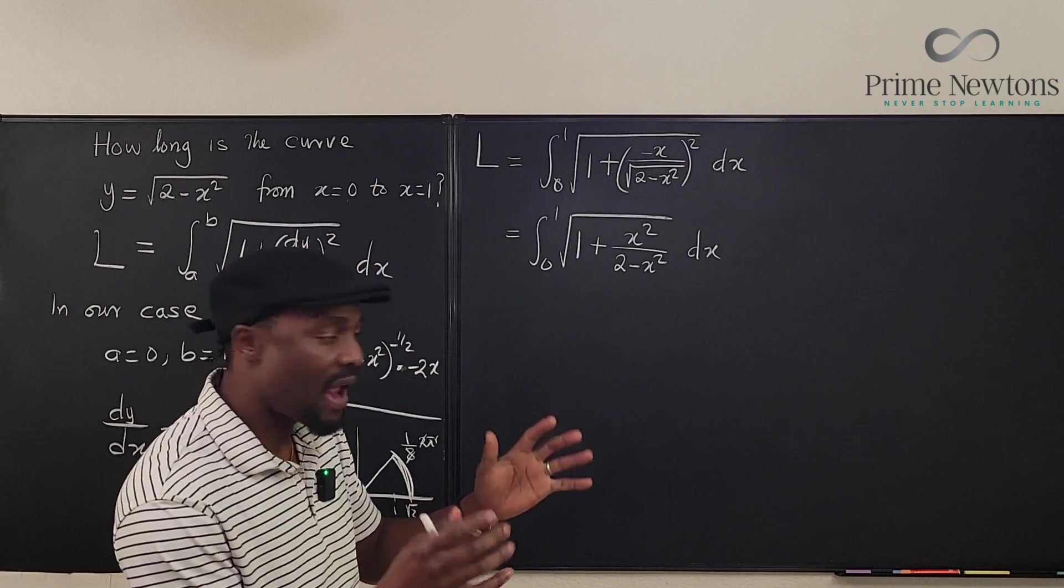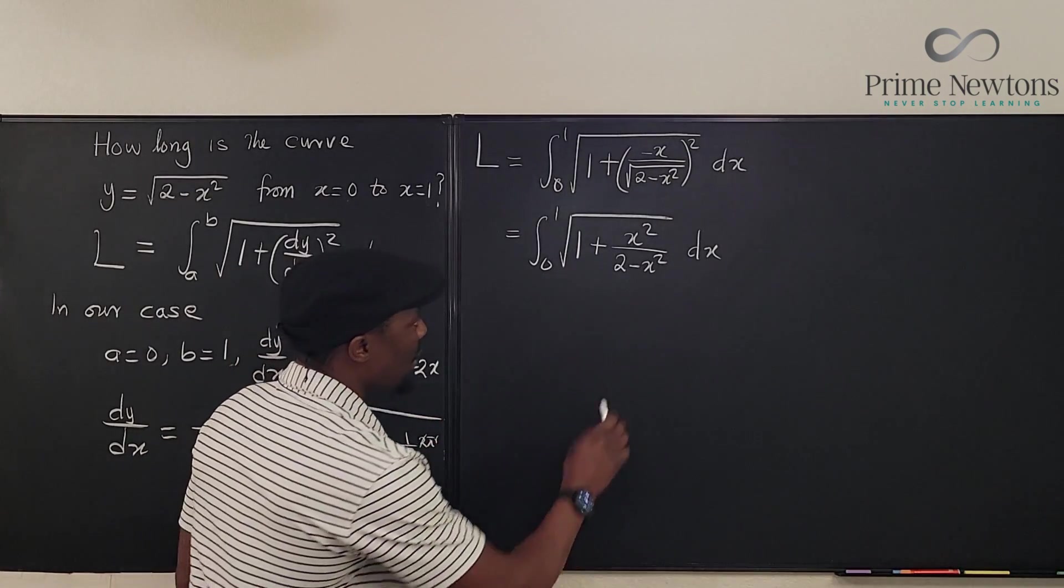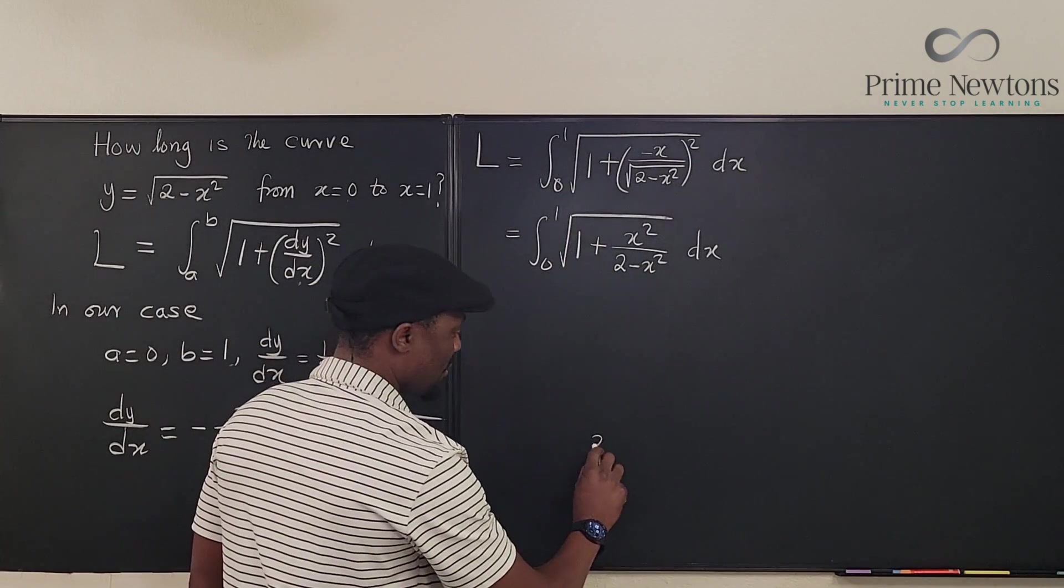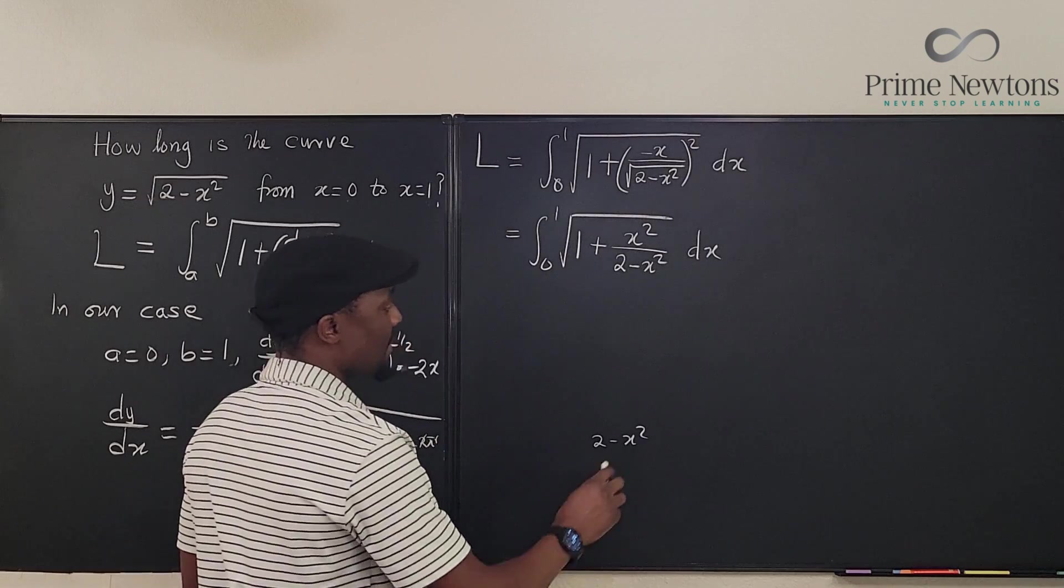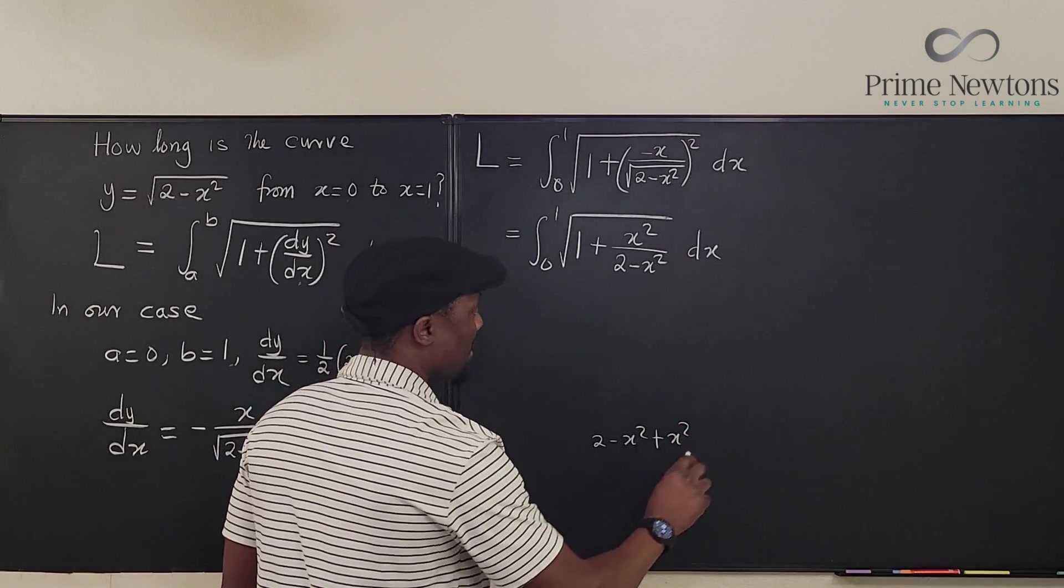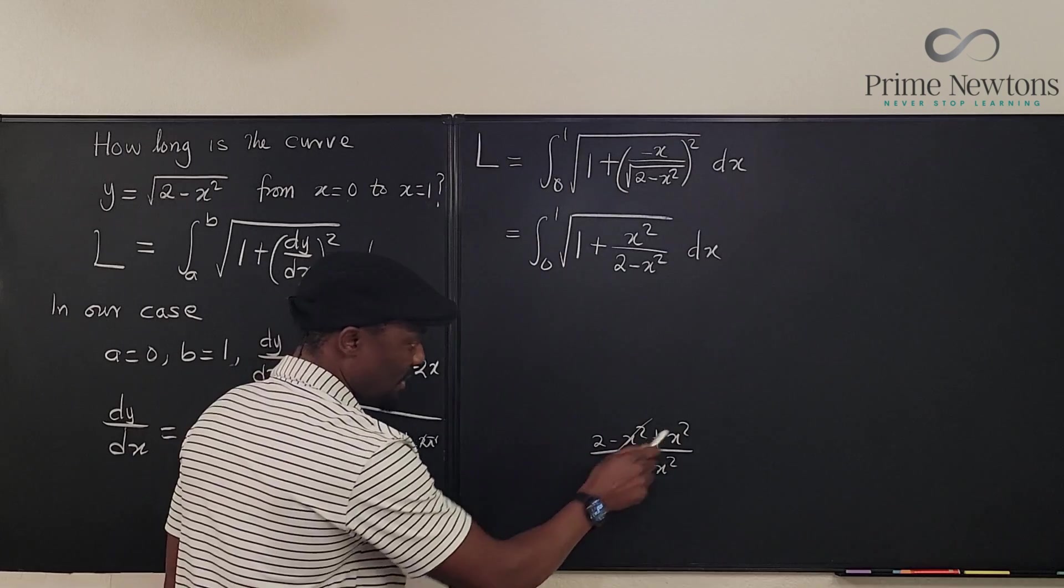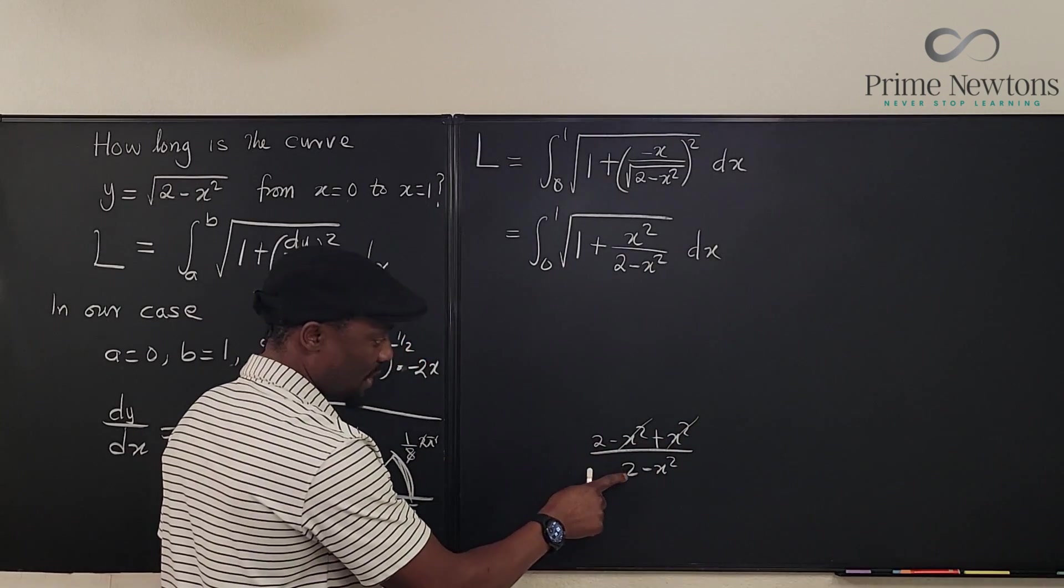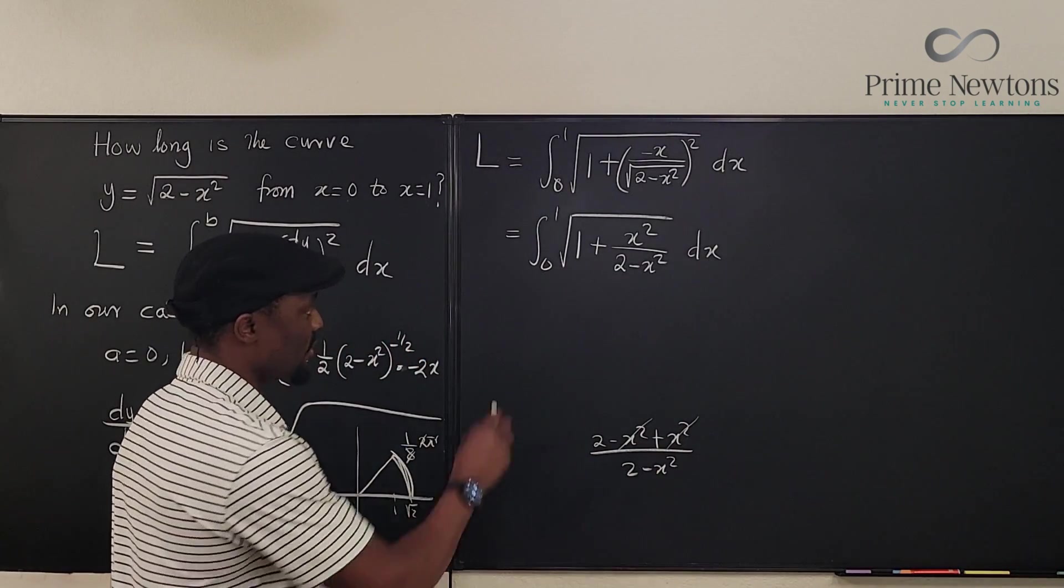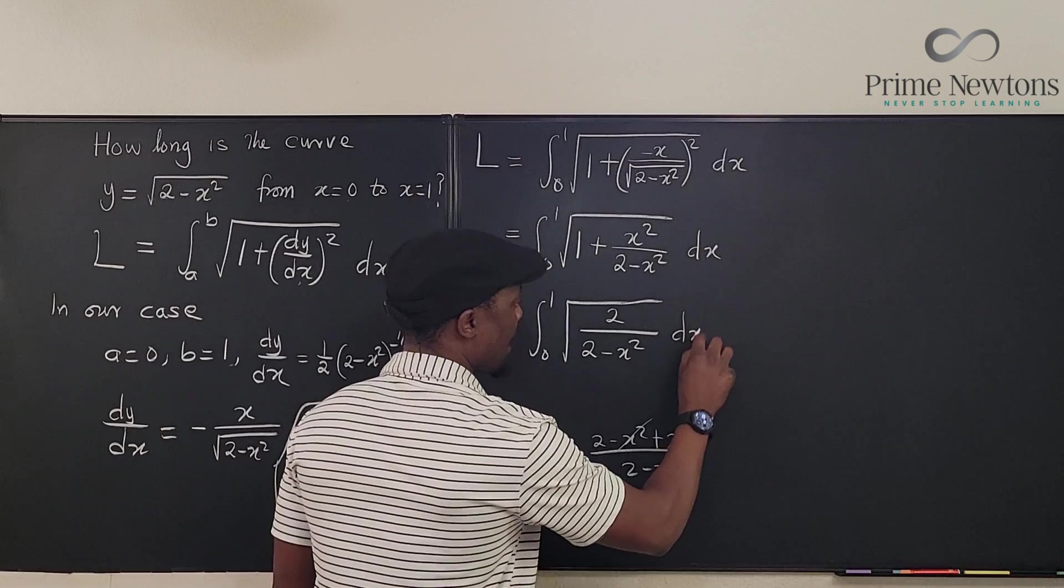Now what happens here? If we make this a common fraction, see what's gonna happen. This will come here. You have (2 - x² + x²) divided by (2 - x²). So this will take this out. You end up with only 2 over (2 - x²). Nice! dx.